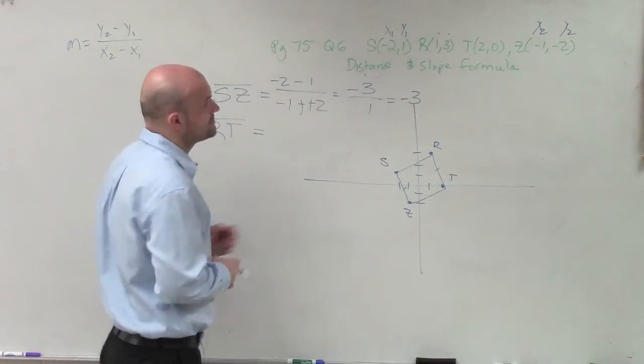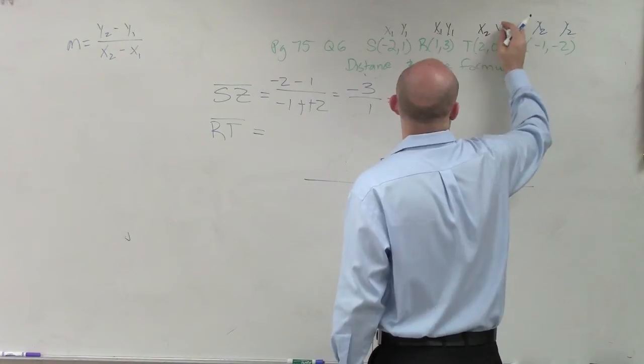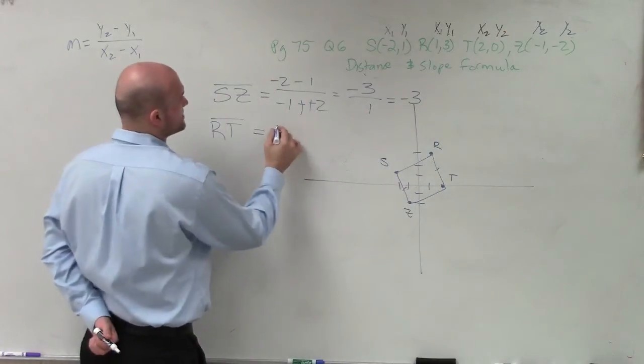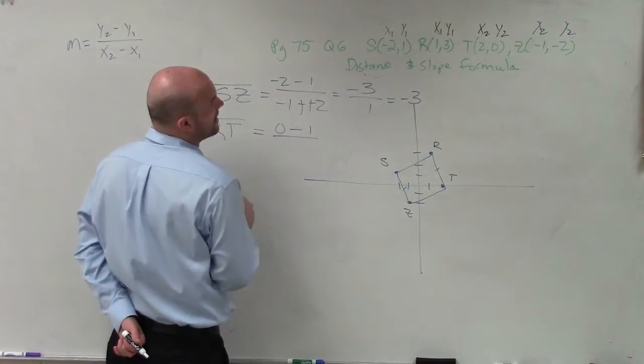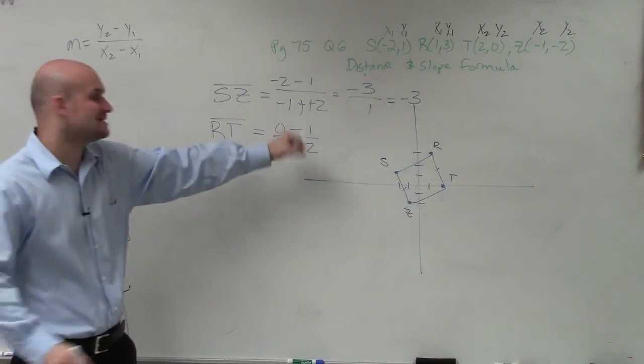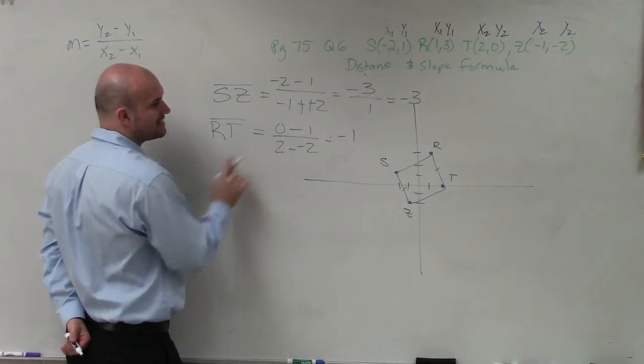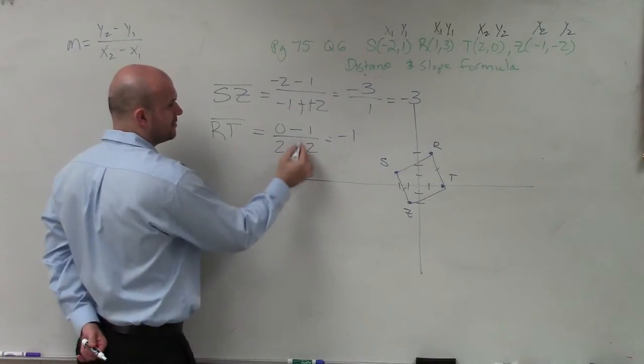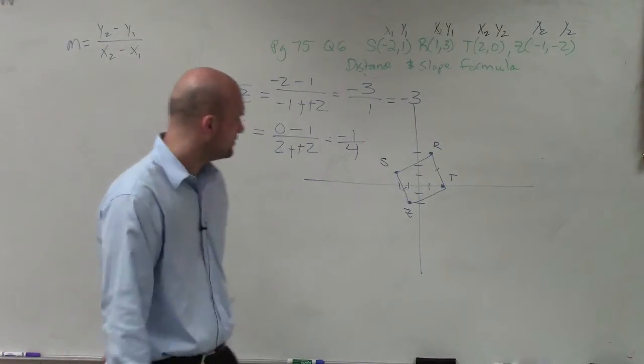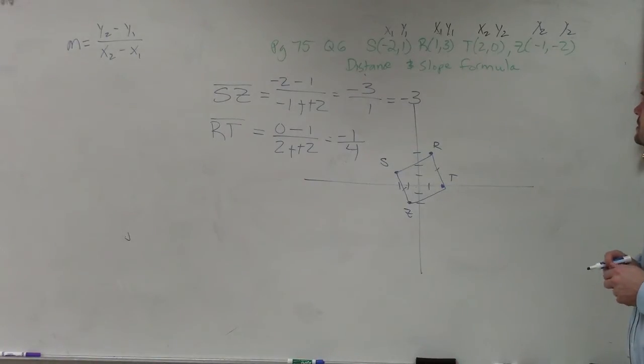So now let's go and determine RT. So to do RT, again, you just label your coordinates: x1, y1, x2, y2. So then what I have is 0 minus 1 divided by 2 minus a negative 2, right? Because the formula is subtract. So it's 2 minus a negative 2. Well, 0 minus 1 equals a negative 1. And 2 minus a negative 2 equals 4. 2, 0, TR, RT.